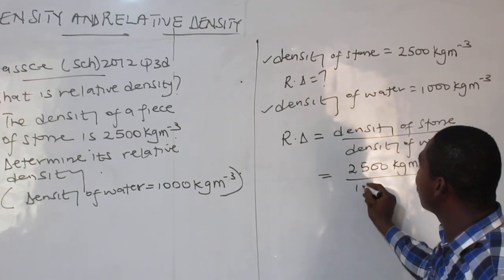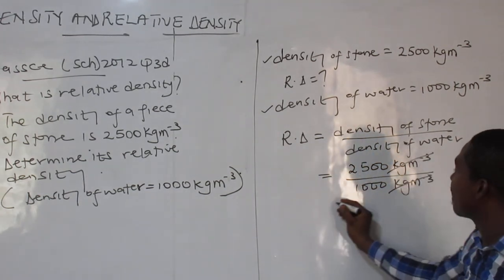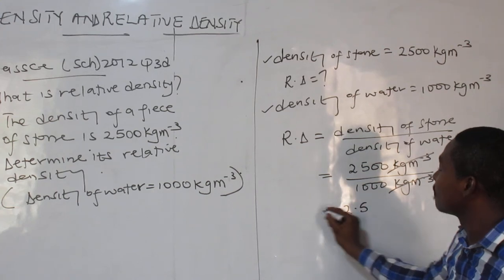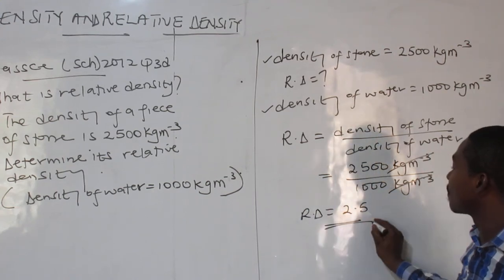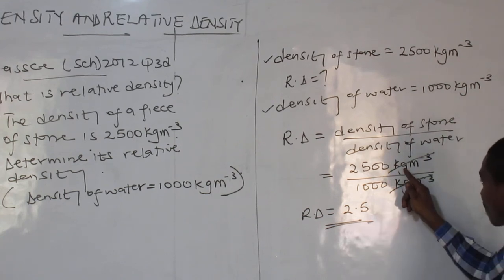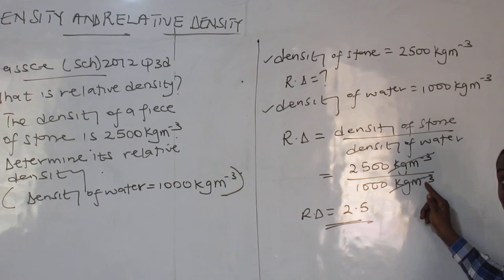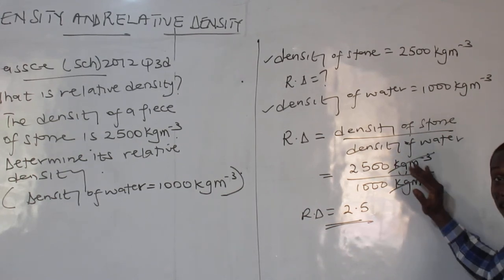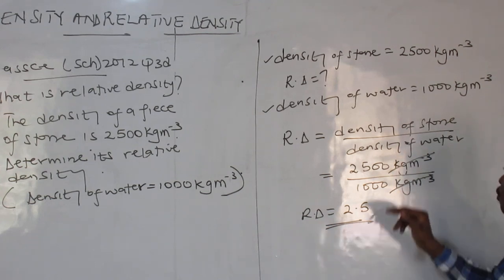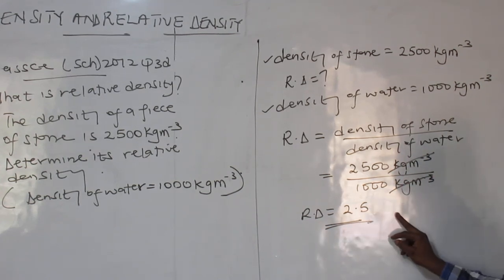Density of stone divided by density of water is 1000. Same unit. That is why relative density has no units. Look at it. It has no units. It's a ratio. The units cancel out. So when you happen to get different units like gram per cm cubed, it means you have to change to look like this. Or change all to have the same pattern. Or you go by kilogram per cubic meter. Please take note.